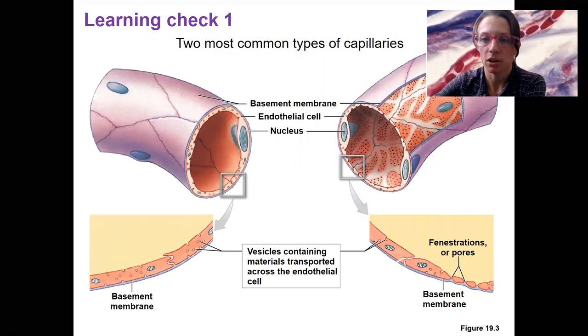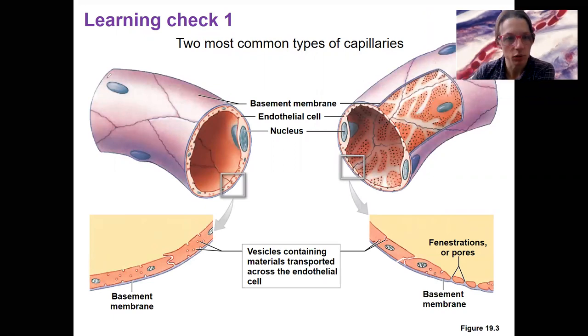The two most common types are continuous, that's over here, where the cells are continuous, right next to each other, tight junctions in between adjacent cells. And the other most common type is fenestrated.